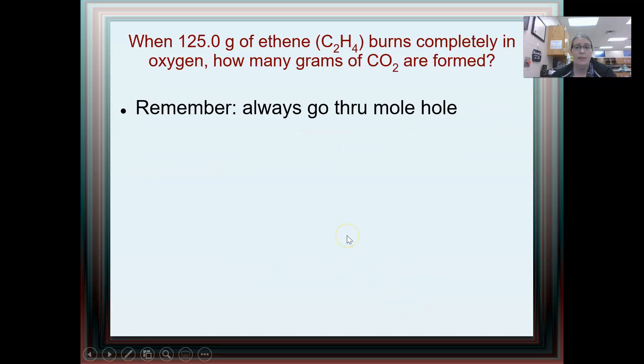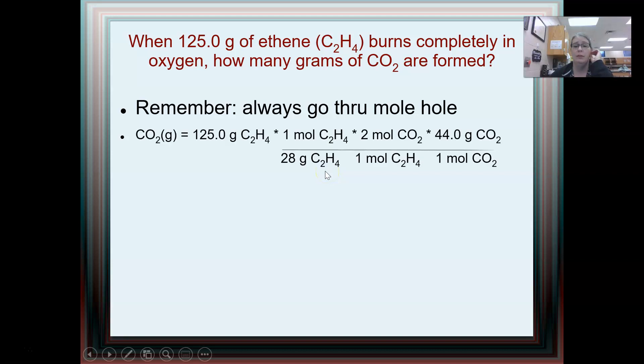So let's take this problem and remember that we are always going to go through moles when we do a stoichiometry problem. So this is a three-step sort of problem. I go from grams of ethene to moles of ethene. Then I use the mole ratio and then since it asked me for grams of CO2, I convert that moles of CO2 back into grams. So the mass of CO2 made is 392.8 grams.